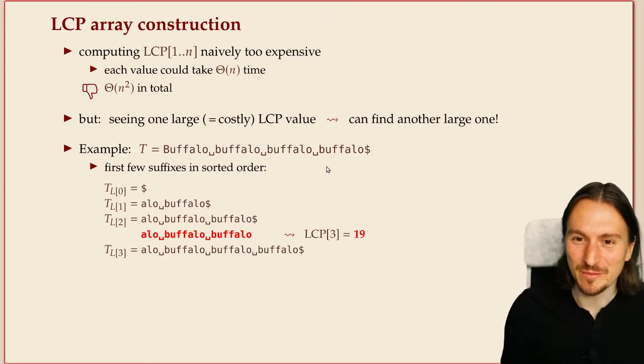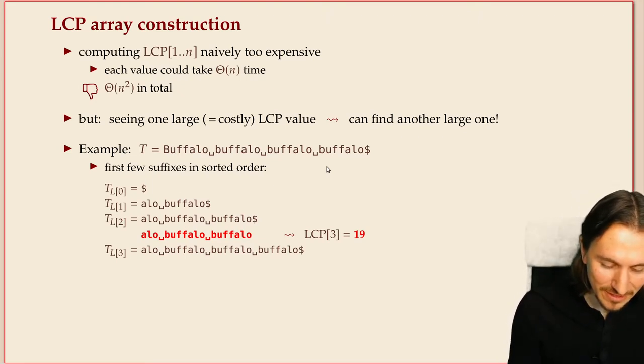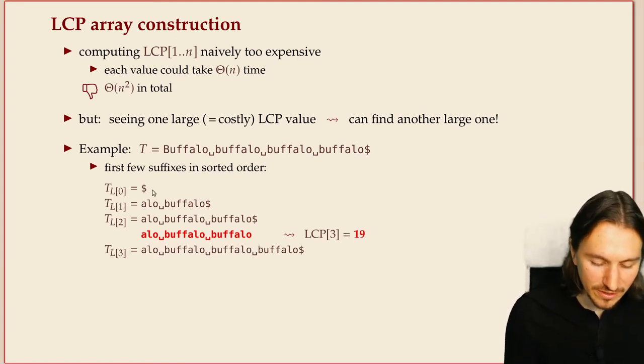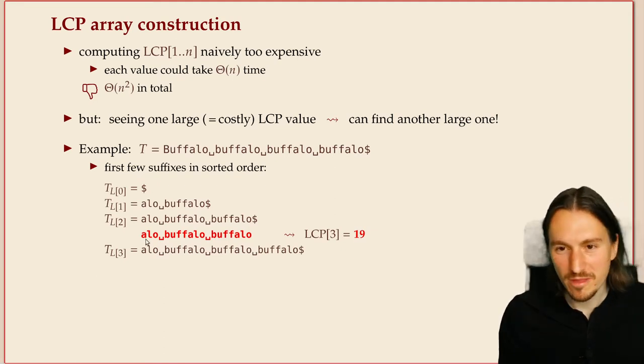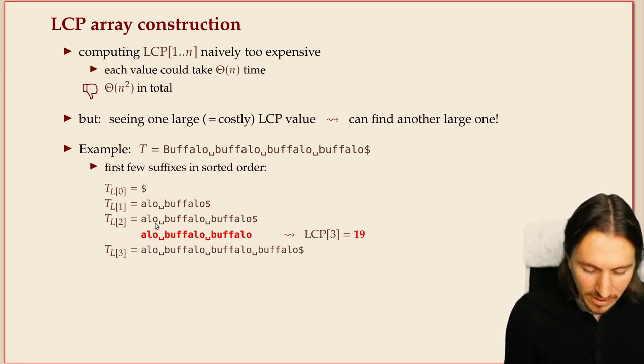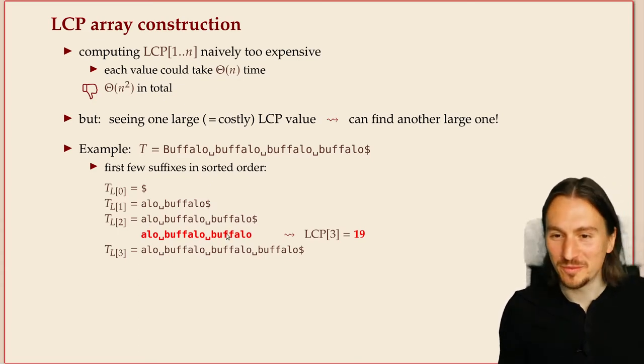It's just a nice example with a lot of repetition. If you look at the suffix array of this text, I've shown the first few suffixes here, then you see that they have a lot of things in common. For example, the second and third, or at position two and three, they share this long allo buffalo buffalo buffalo.